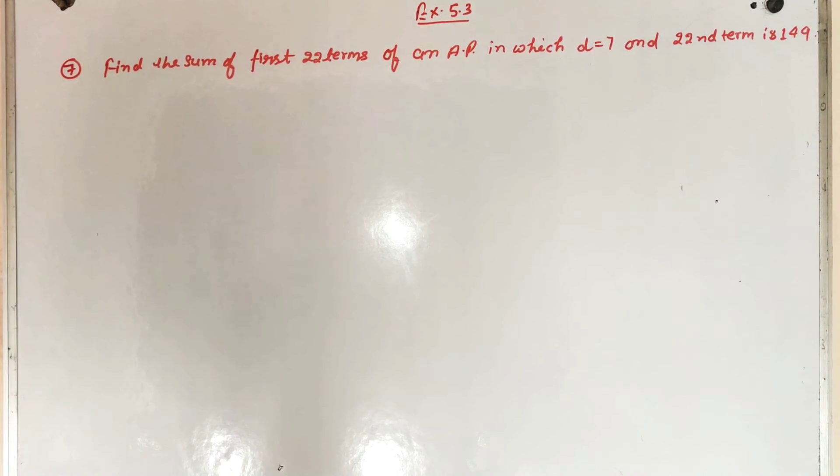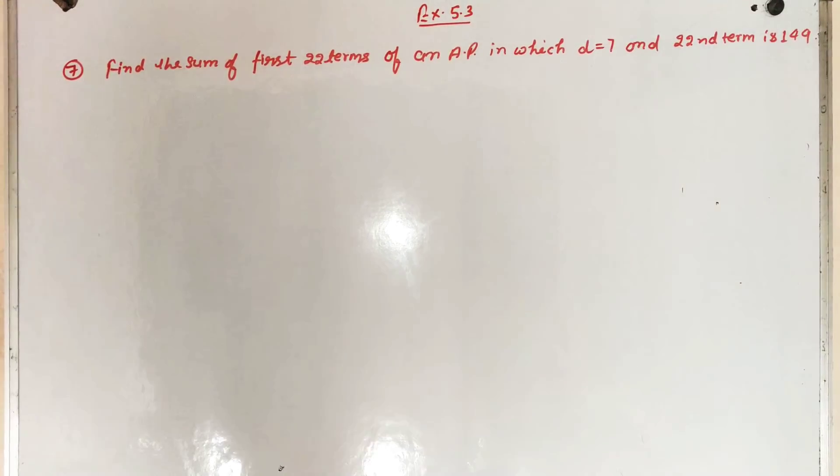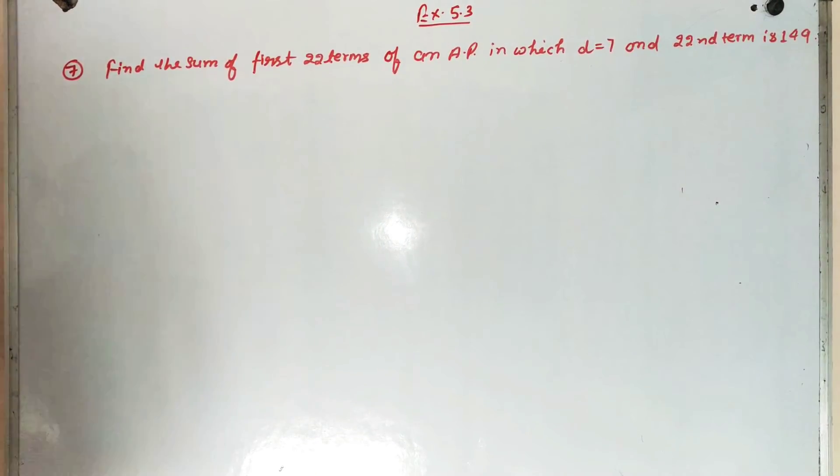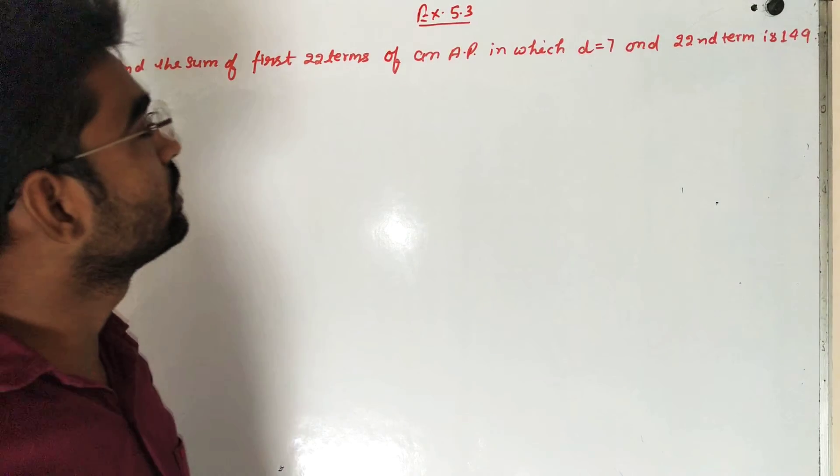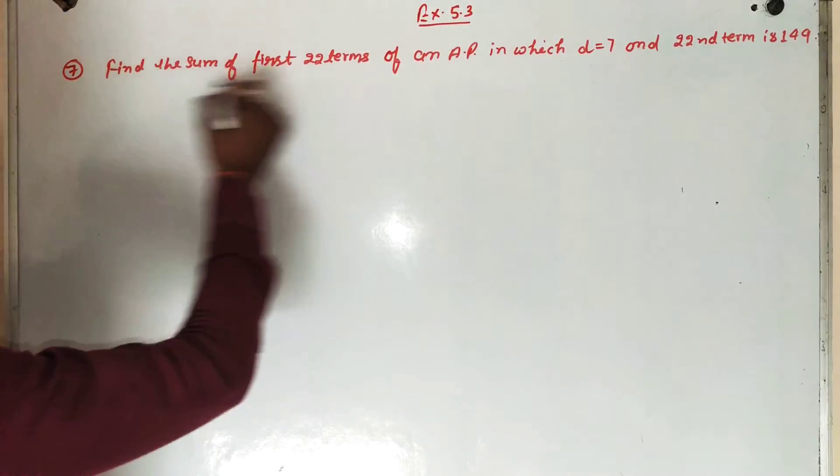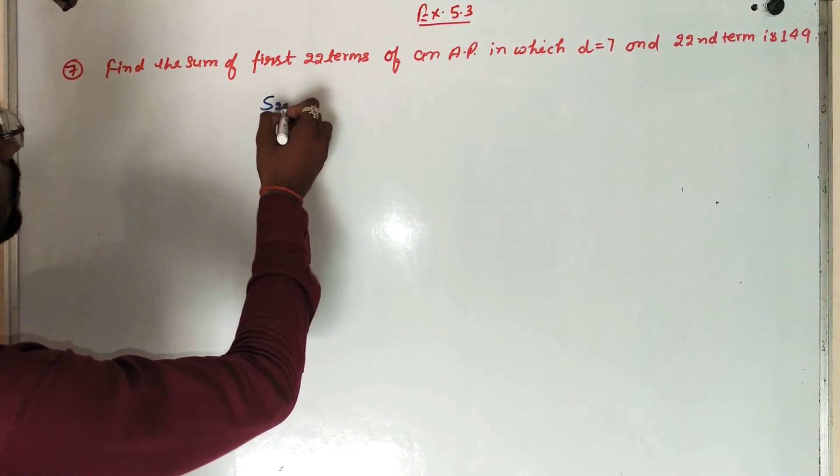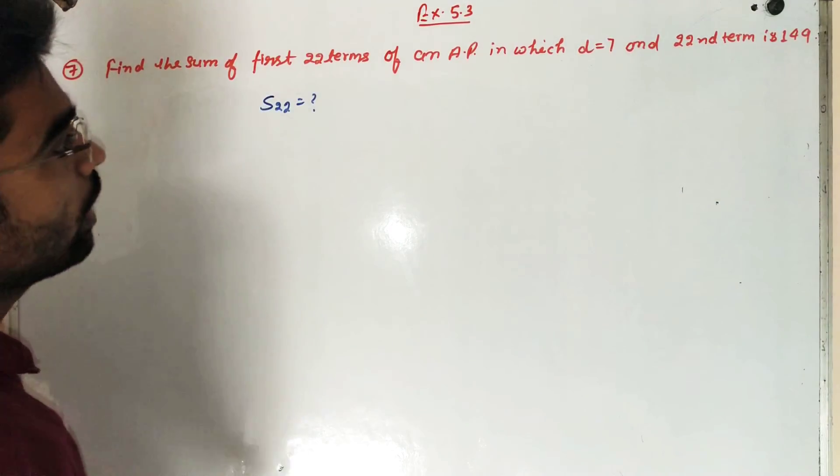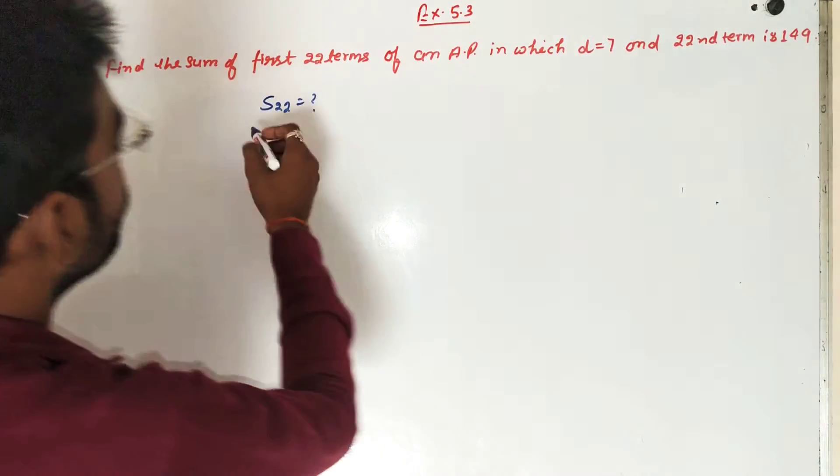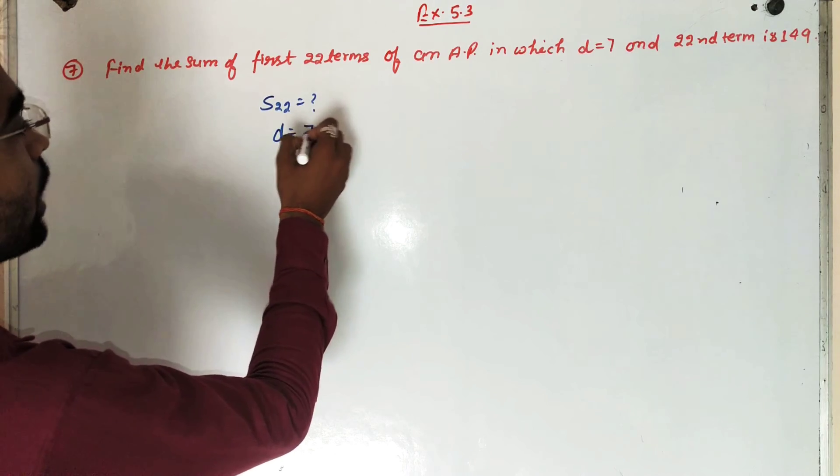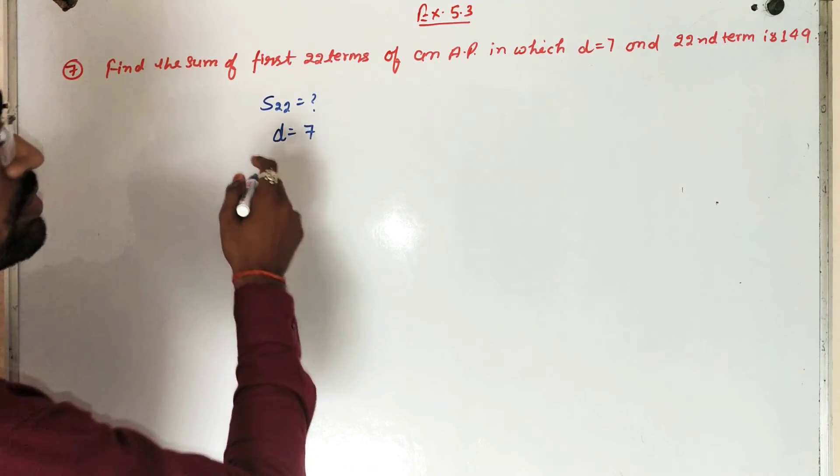Now, it is question number 7. Find the sum of first 22 terms of an AP in which common difference D is equal to 7.